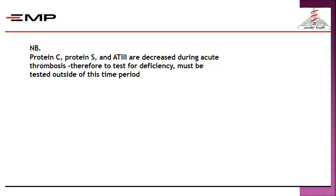It is important to note that protein C, protein S, and antithrombin 3 are all decreased during acute cases of thrombosis. Therefore, avoid testing these proteins during acute thrombotic attacks — wait until the condition subsides and the patient is off treatment. Otherwise, results may be falsely decreased.